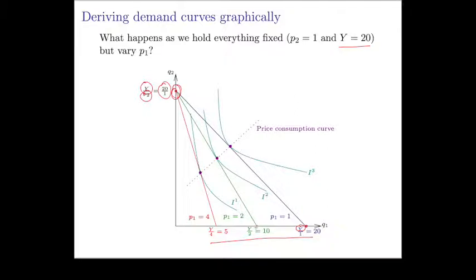And each time this corner tells us how much of good 1 you could buy if you only bought good 1. Well if the price of good 1 is 1, and you have 20 as your income, well you can buy 20 units of good 1.